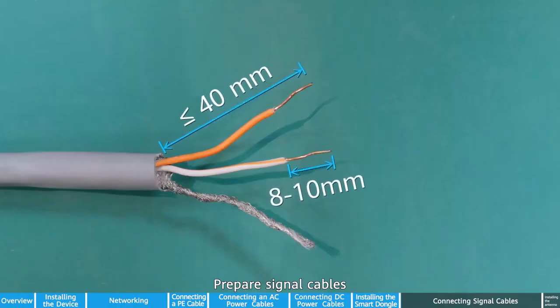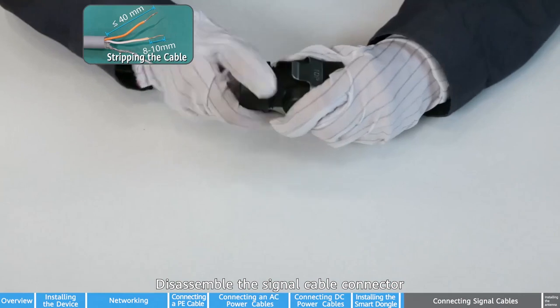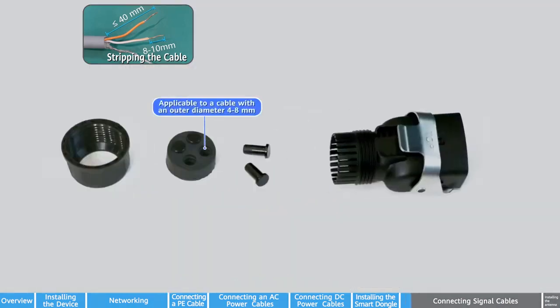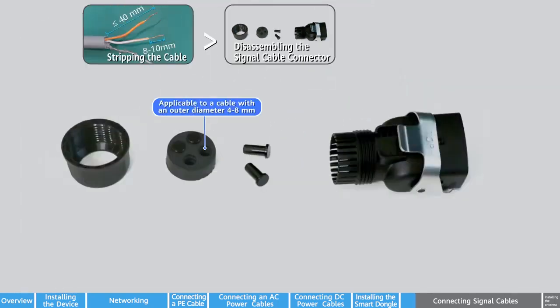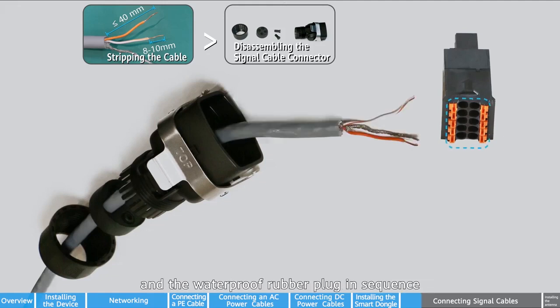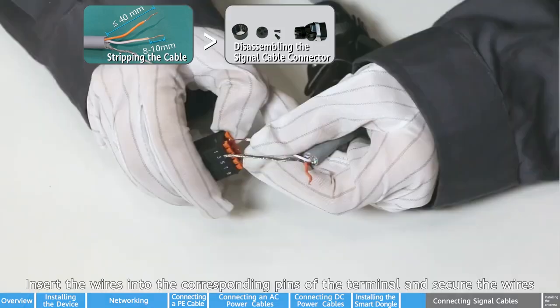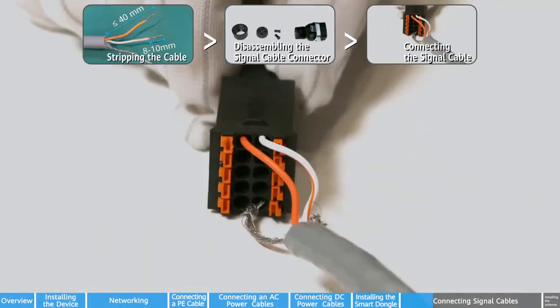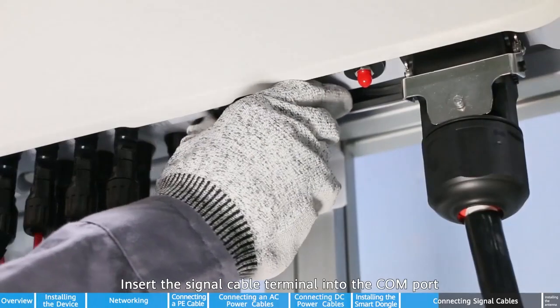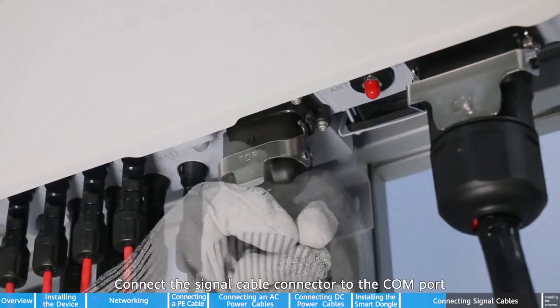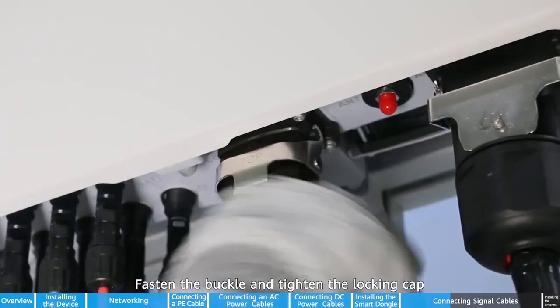Prepare signal cables. Disassemble the signal cable connector. Route the signal cables through the locking cap and the waterproof rubber plug in sequence. Insert the wires into the corresponding pins of the terminal and secure the wires. Insert the signal cable terminal into the COM port. Connect the signal cable connector to the COM port. Fasten the buckle and tighten the locking cap.